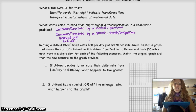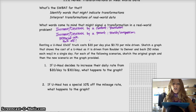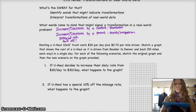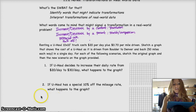Alright, let's look at a few examples. Number one. Renting a U-Haul 10 by 10 foot truck costs $20 per day plus $0.70 per mile driven. It says to sketch the graph that shows the cost of a U-Haul as it's driven from Boulder to Denver and back, 50 miles each way, in a single day. For each of the following scenarios, sketch the original graph, and then the new scenario on the graph provided.